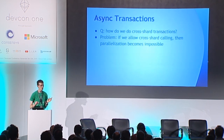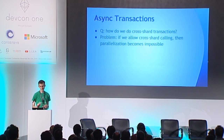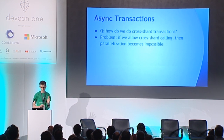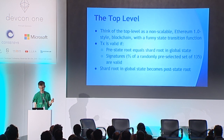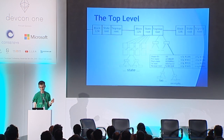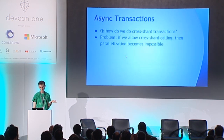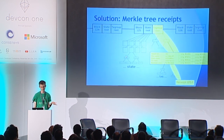Getting back to cross-shard transactions: the problem is if we allow arbitrary cross-shard calling, then parallelization becomes impossible. You could potentially have contracts in 20 different shards all accessing or modifying accounts in 20 other shards in a way that's completely unfriendly to parallel analysis — non-commutative in a whole bunch of intractable ways. The solution is to make it asynchronous.